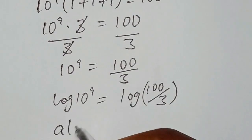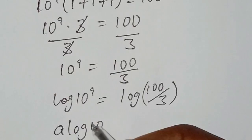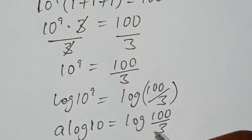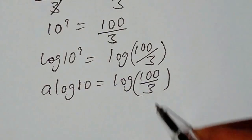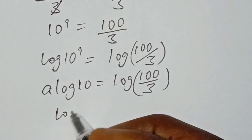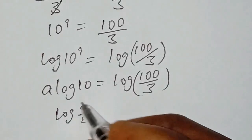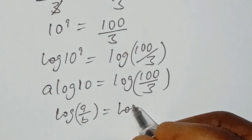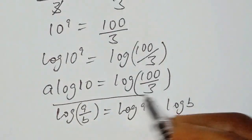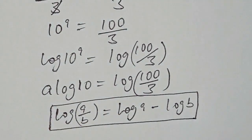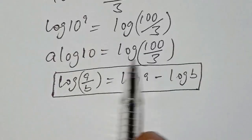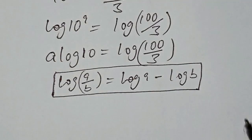We bring the exponent a down, so we have a times log of 10 equals log of 100 over 3. The right-hand side can be simplified: when we have log of a over b, we can express it as log of a minus log of b.